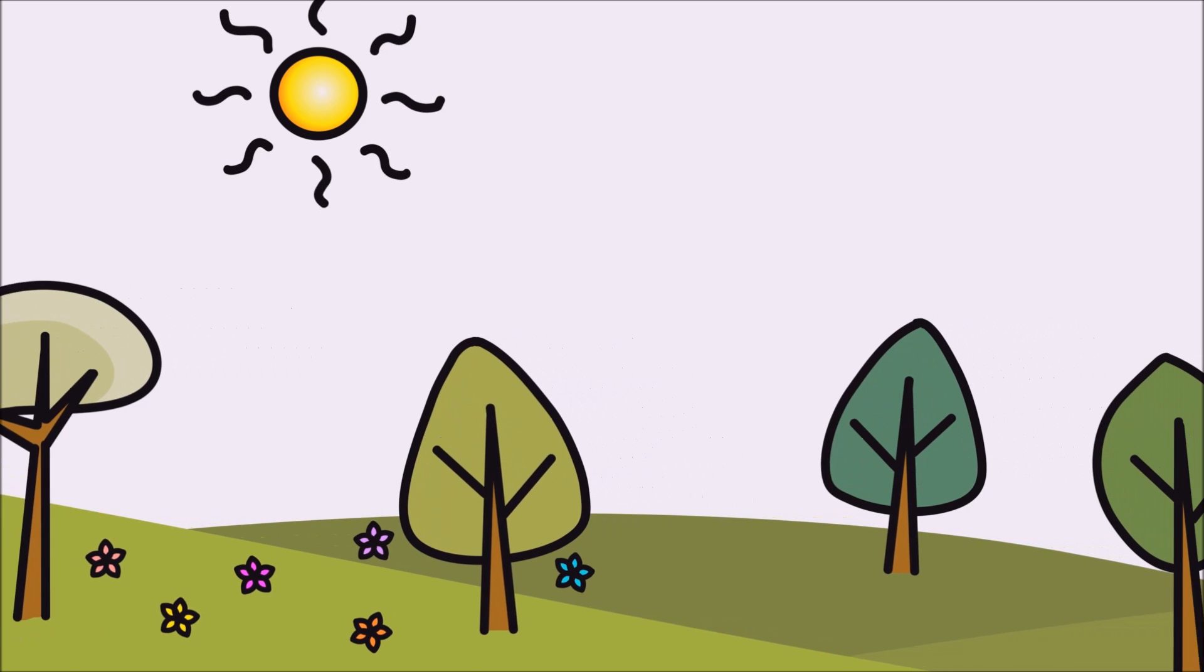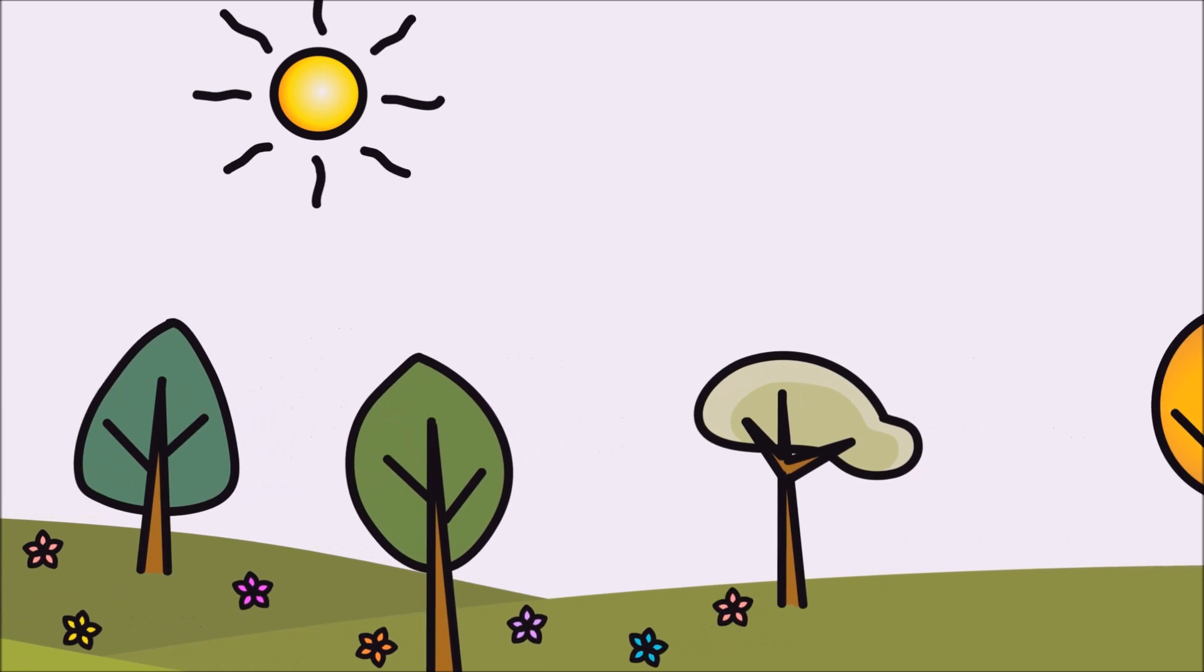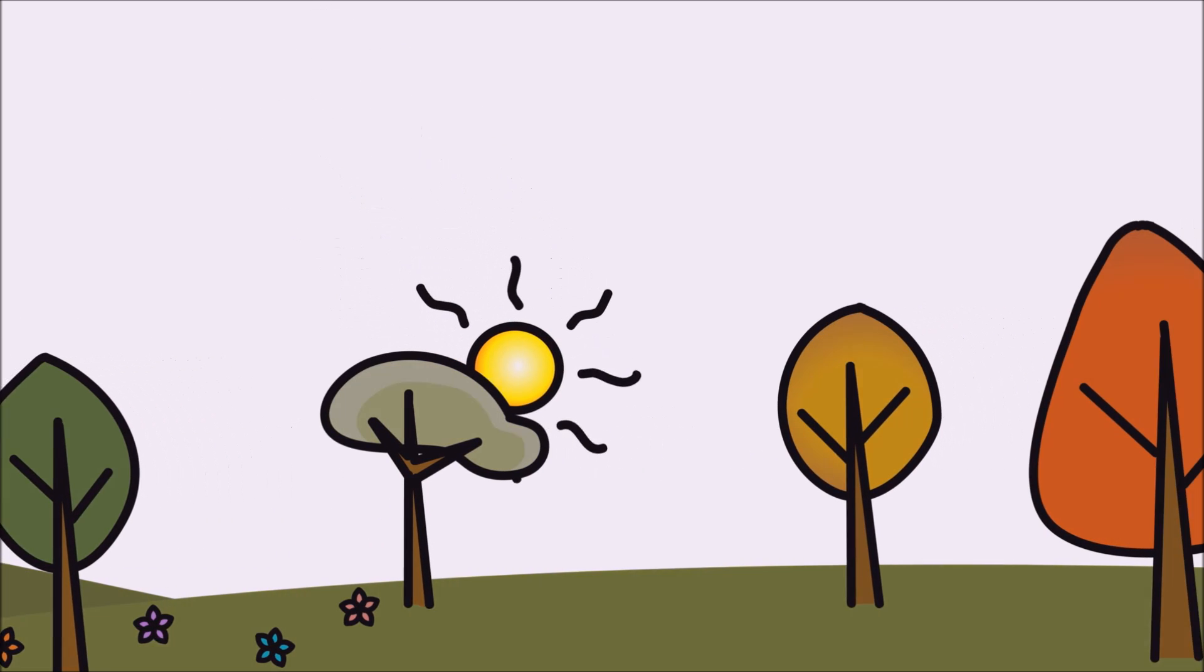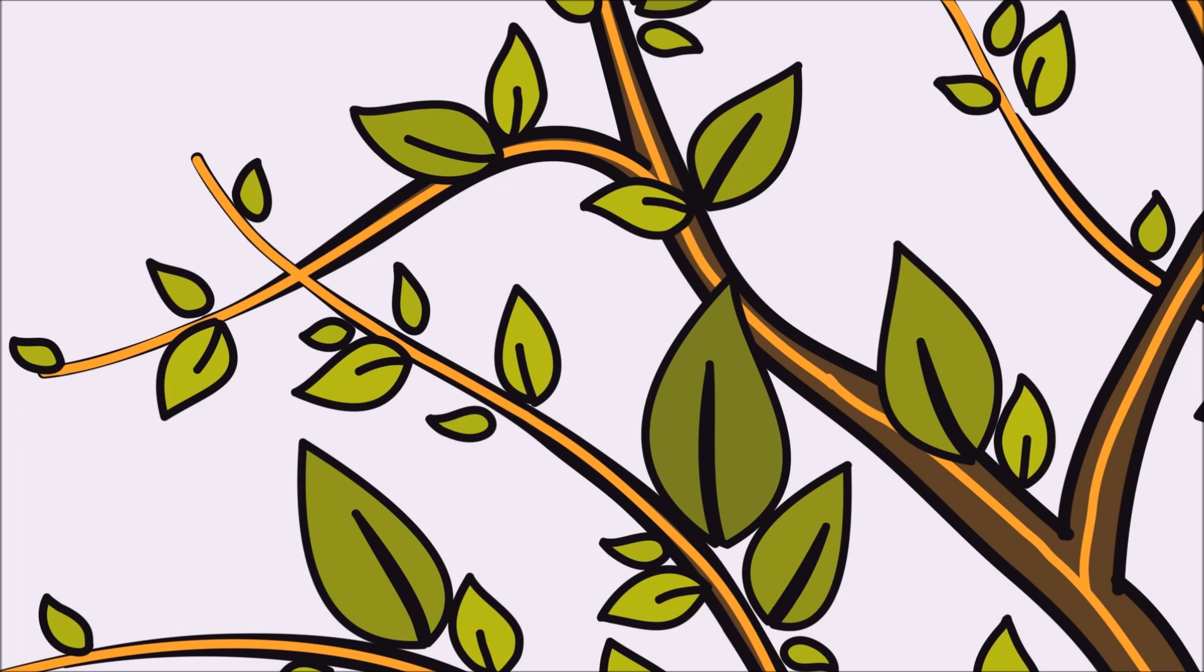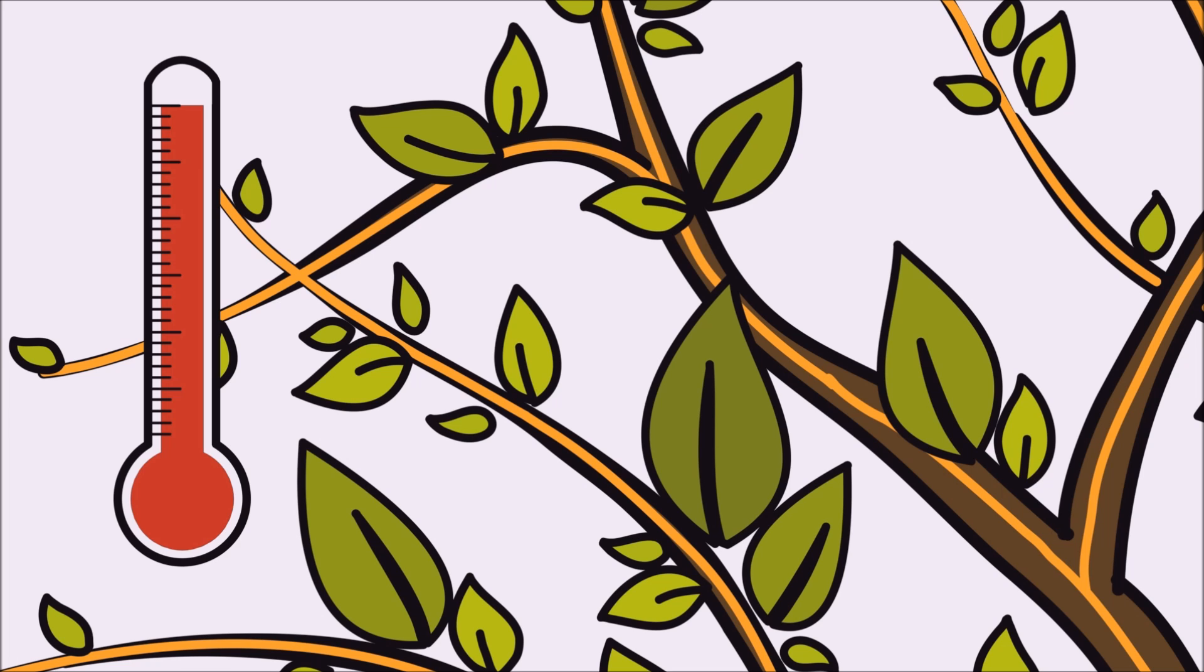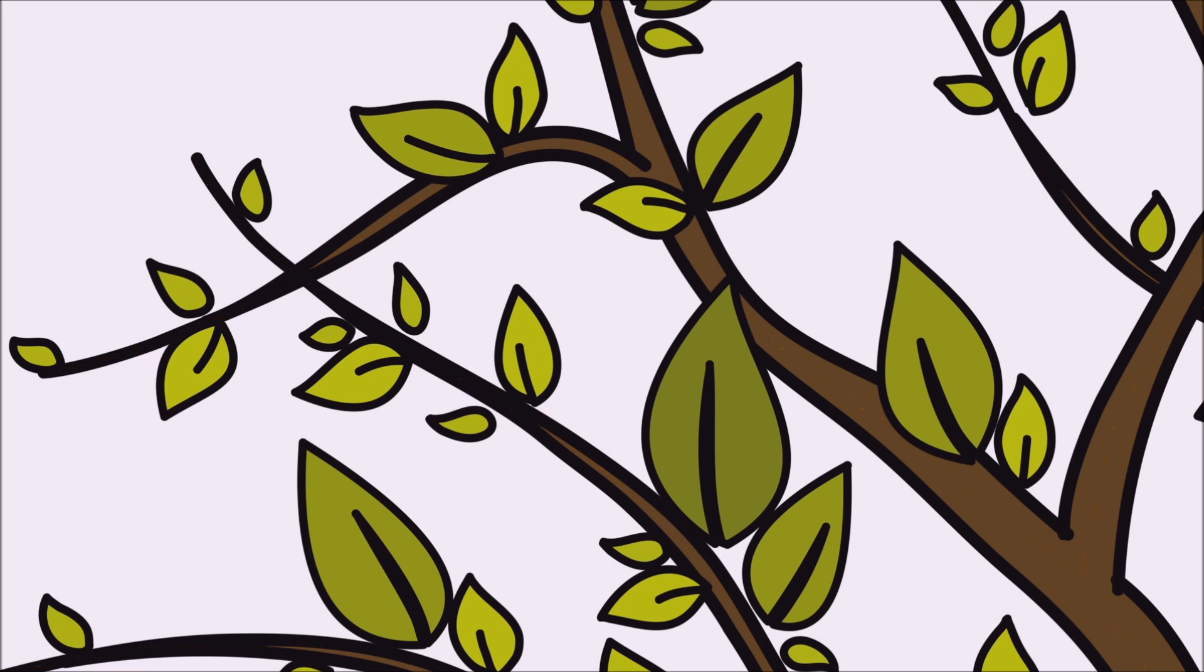During spring and summer, the sun is bright and the days are long. But when autumn comes, the days become shorter. Because the sun isn't out as much and the temperature cools down, the leaves stop their food-making process.